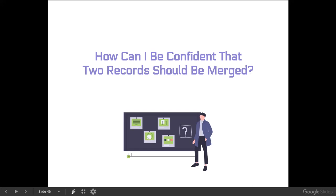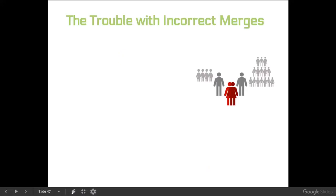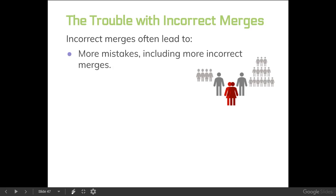The two records did not represent the same human being. Incorrect merges can lead to more mistakes, including more incorrect merges, because once you put two records together with different information, you've got contradictions. You get bad hints, people adding the wrong children, the wrong spouses, and so forth. Incorrect merges do tend to snowball — not just in the immediate family, but across multiple generations. I've seen bad merges cascade to as many as five generations.